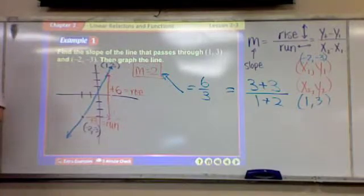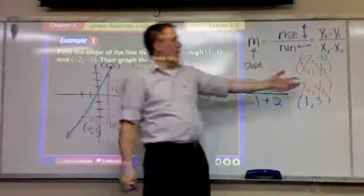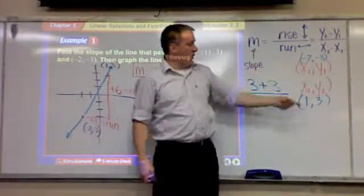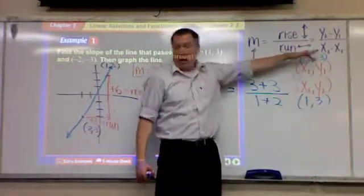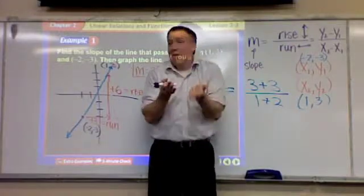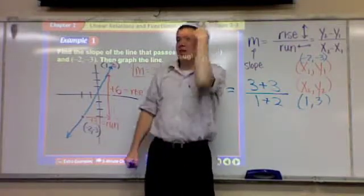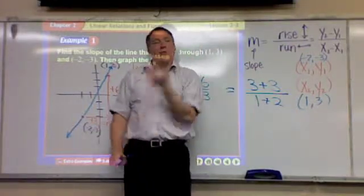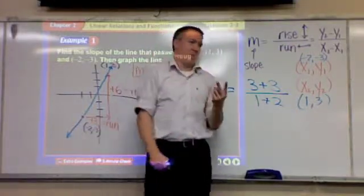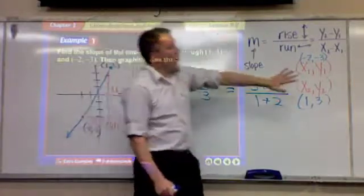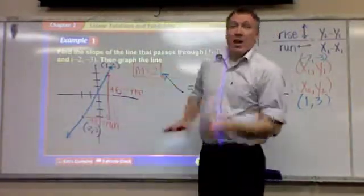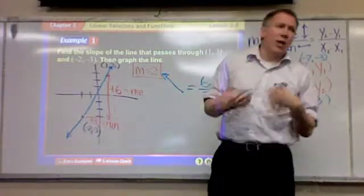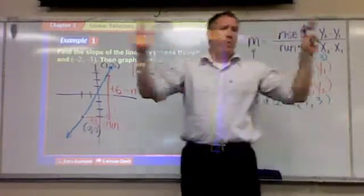Same answer. So why did we do all that? And guess what — if you would've picked the opposite way, if you would've called this one the first point and the other the second point and switched it, you still would've gotten two. No matter which way you do it, you should always get the same answer. So that's the formula way, and the other is the picture way. Either one's okay, but you really need to be able to do both.